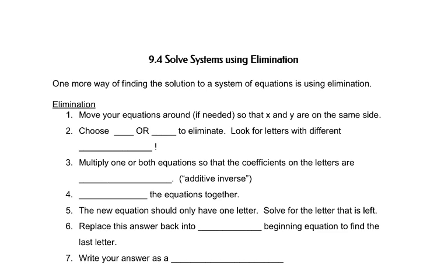You move your equations around if needed so that x and y are on the same side. You choose to eliminate x or y. It doesn't matter which, but it's best to look for numbers or the letter that has a different sign - one positive, one negative.